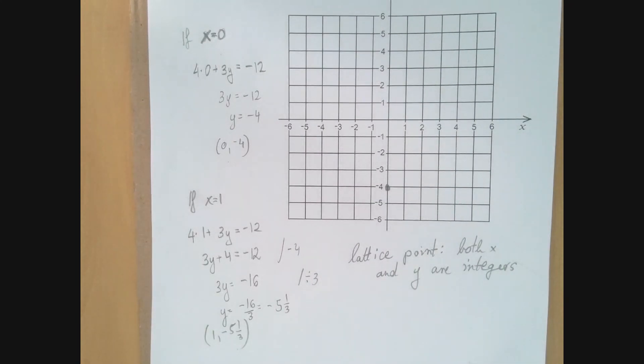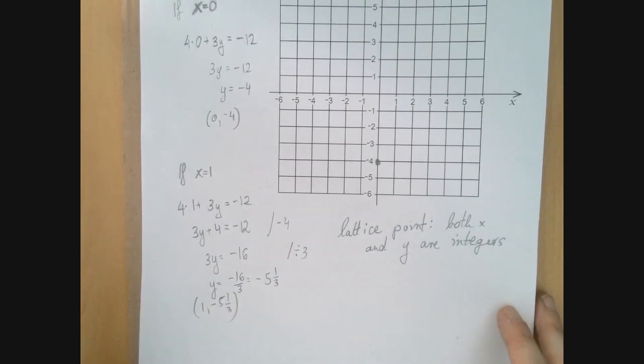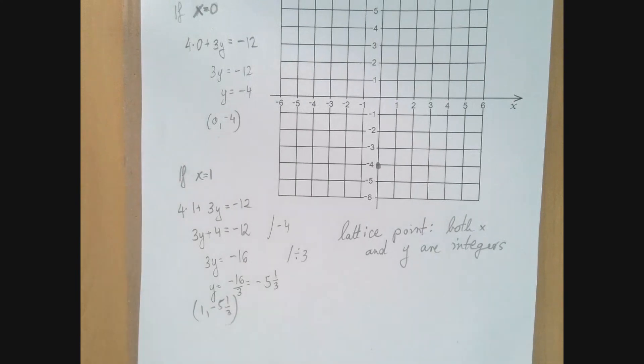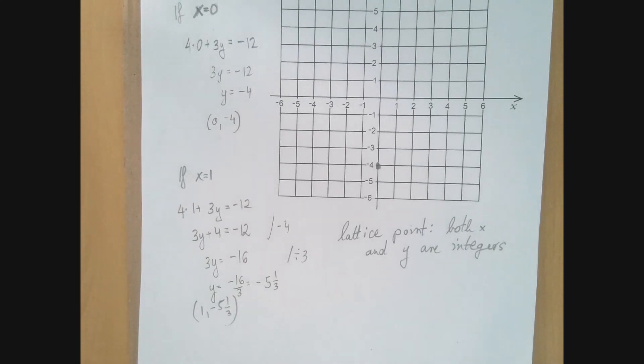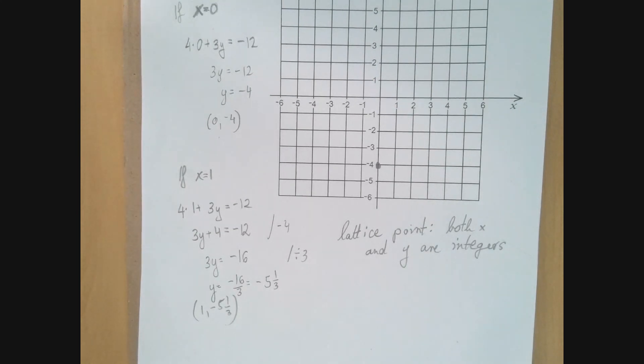If we insist on using lattice points, and we should as long as we can, in this particular case, when we solve for y, in both cases we divided by 3. So getting an integer value for y hinges on divisibility by 3, which means that if a number worked, then the next number that will work is if we add or subtract 3 or a multiple of 3. If 0 worked, then 1 won't work, 2 won't work, but 3 will again work.